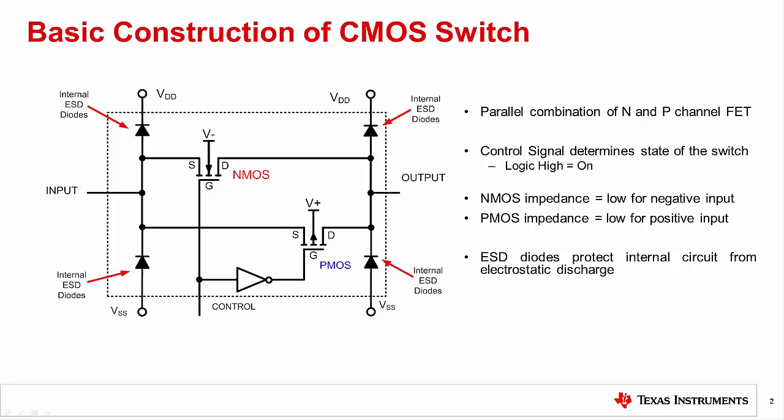When proper precautions are not taken, ESD can damage semiconductor devices. Most semiconductor devices have internal ESD protection diodes clamped to either VDD or VSS, or both. The primary function of these internal ESD diodes is to provide protection against ESD events during assembly and test of the devices. These diodes have a typical forward voltage in the range of 0.4 to 0.7 volts and a current carrying capacity of 10 to 30 milliamps. They are reverse biased under normal operating conditions, but become forward biased as the inputs rise above the positive supply or below the negative supply.